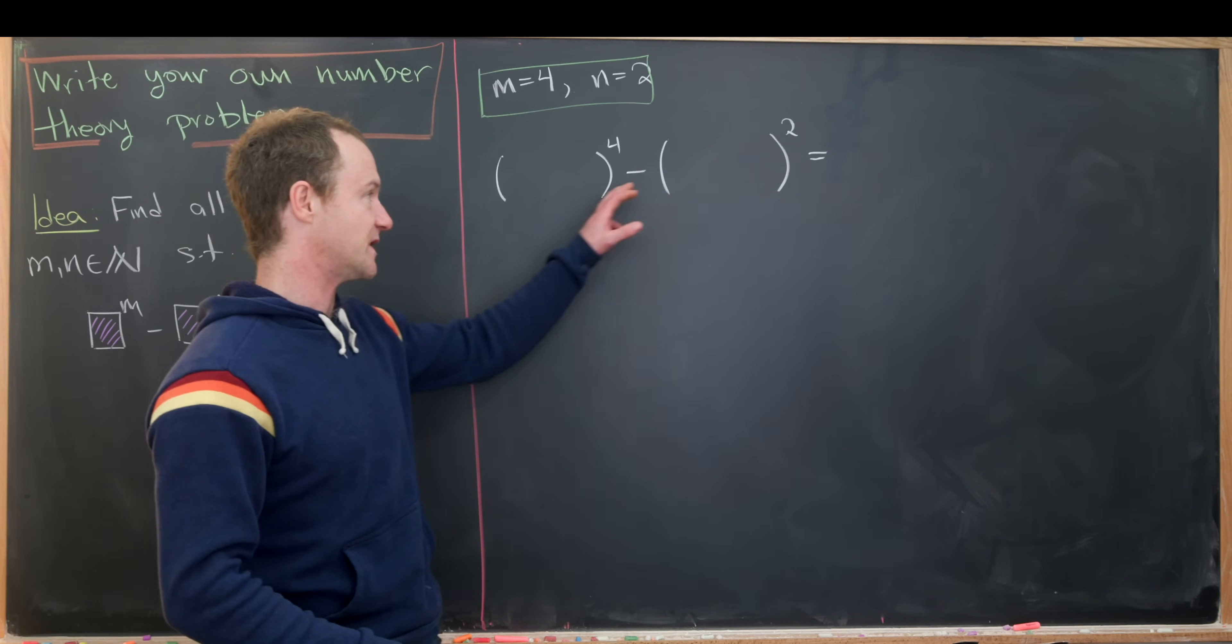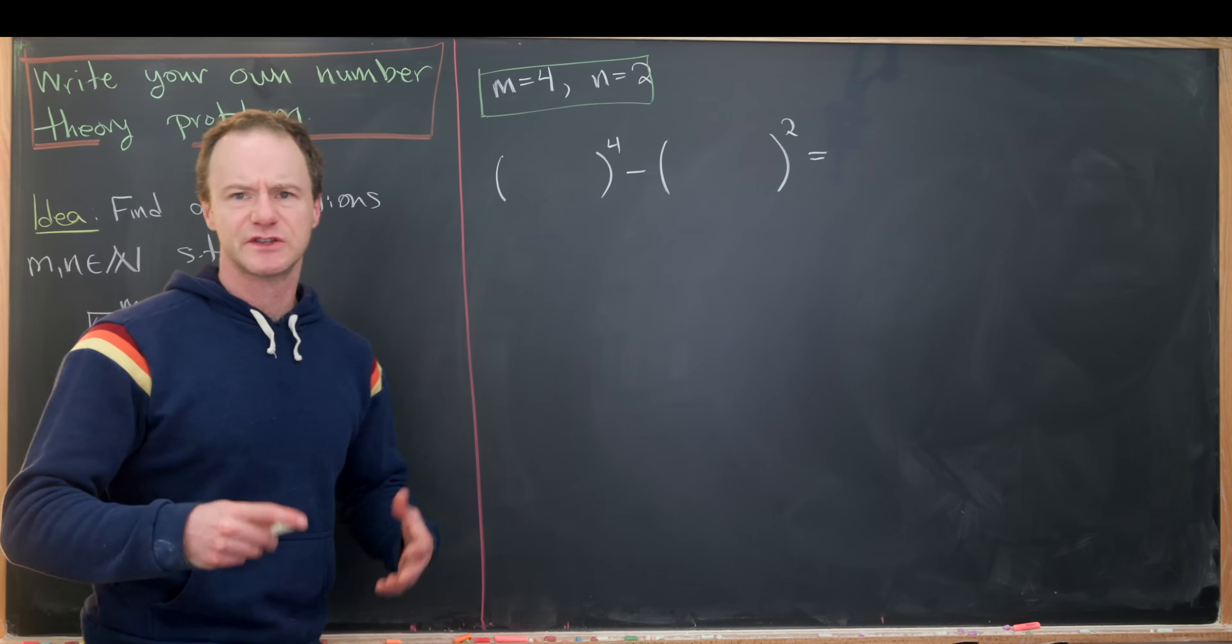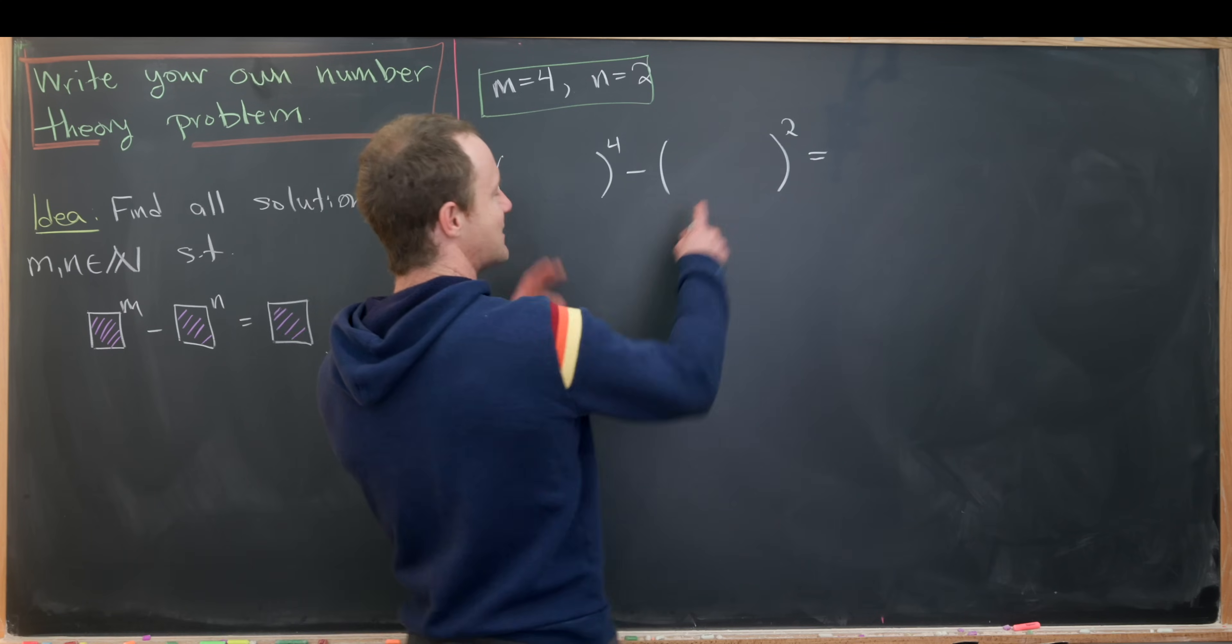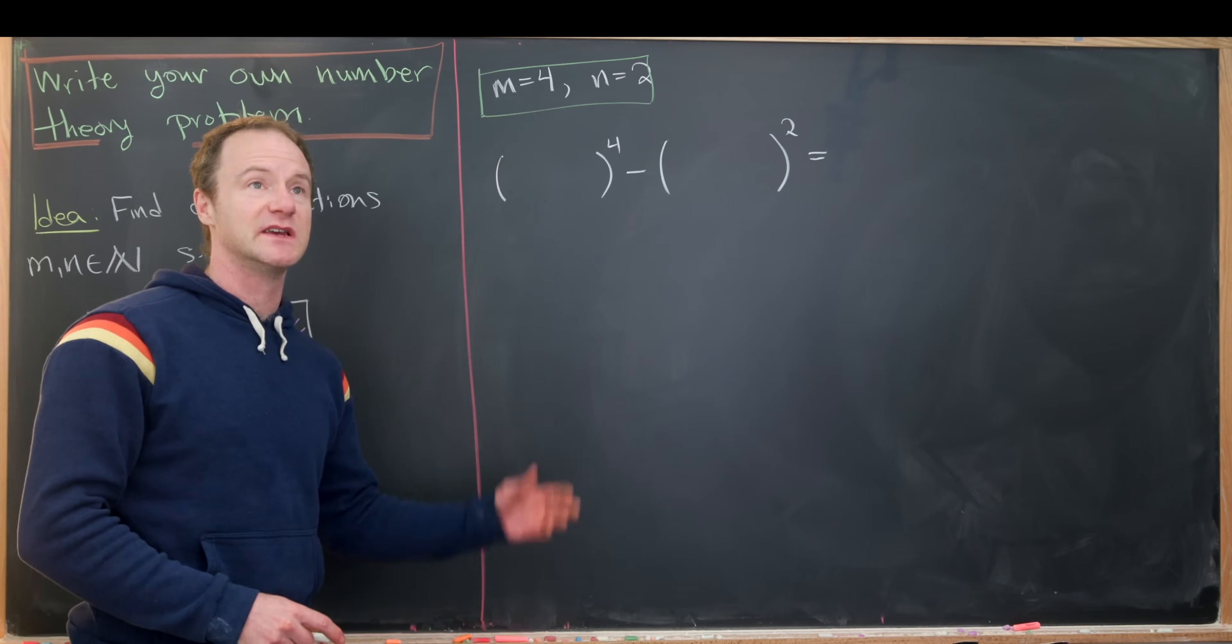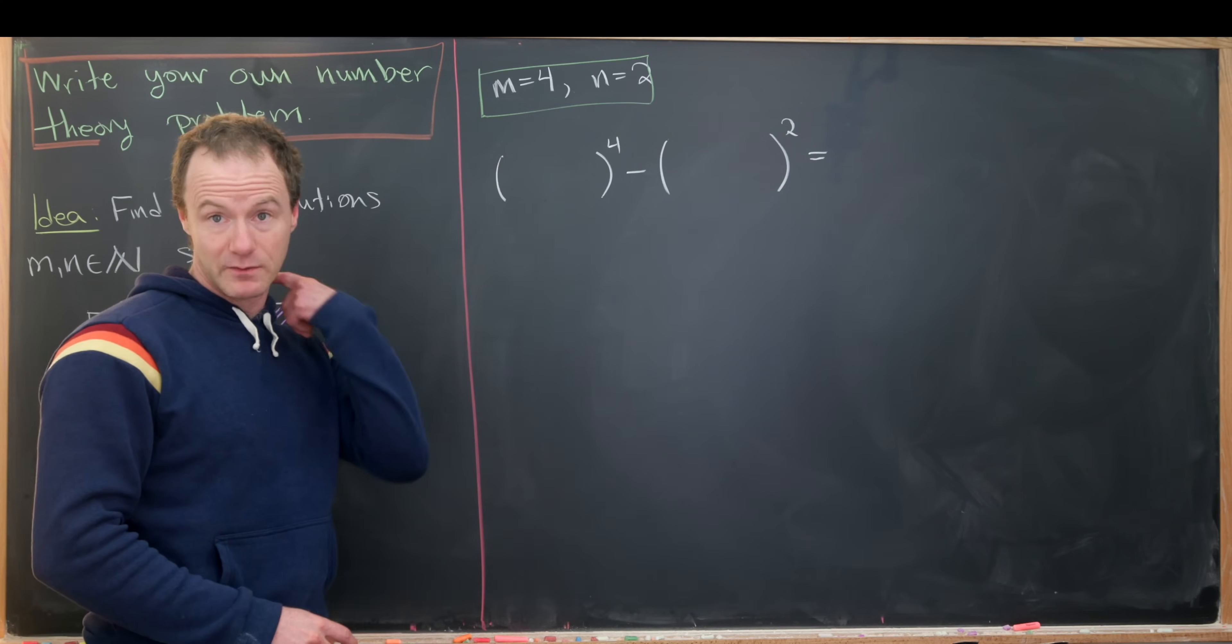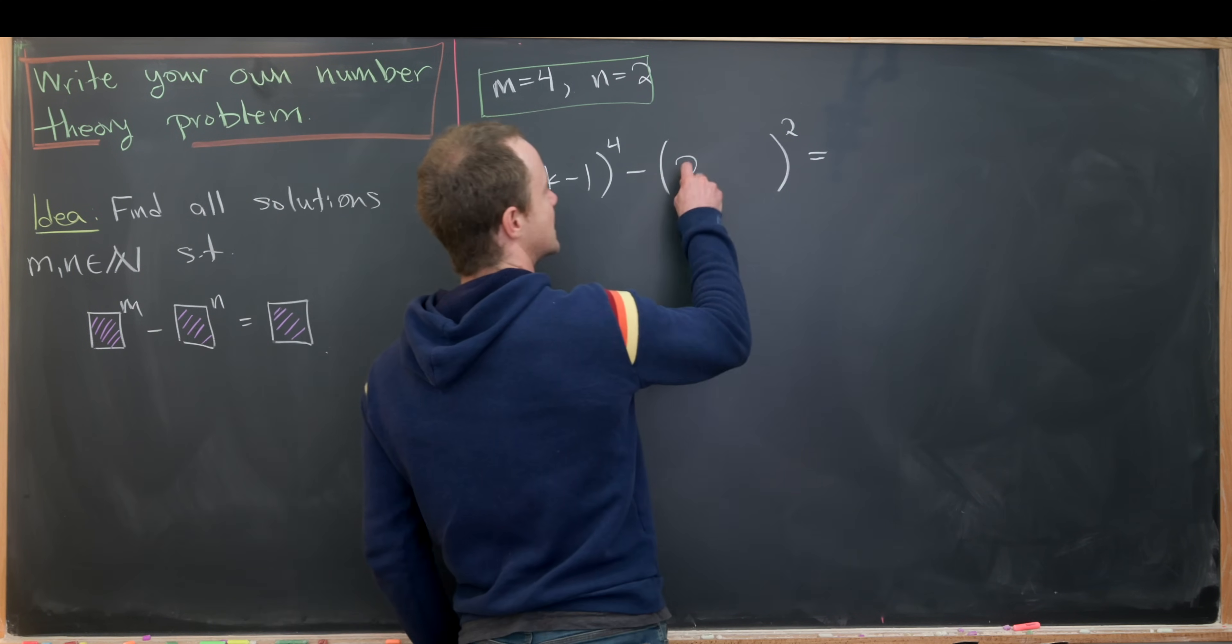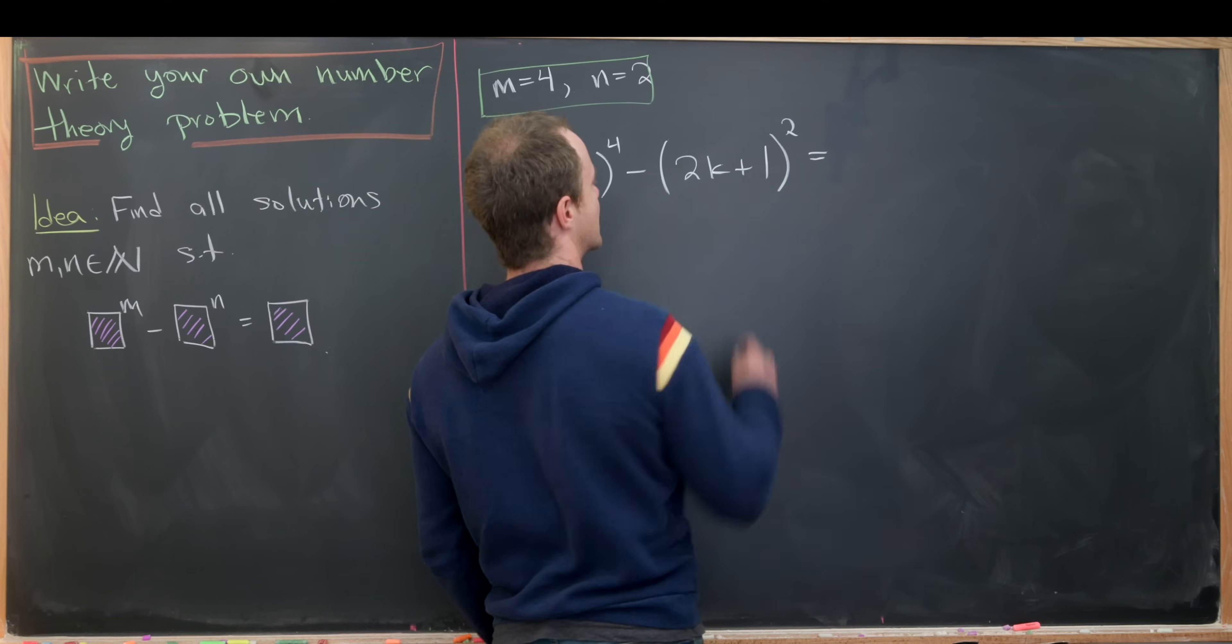Furthermore, we're going to put polynomials in here and here so that we can generate those numbers. Maybe just so that we keep everything nice, I'm going to put consecutive odd numbers inside these parentheses. Let's take 2k minus 1 here and 2k plus 1 here.